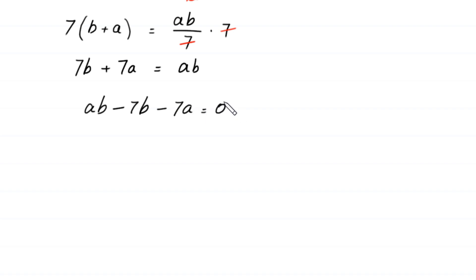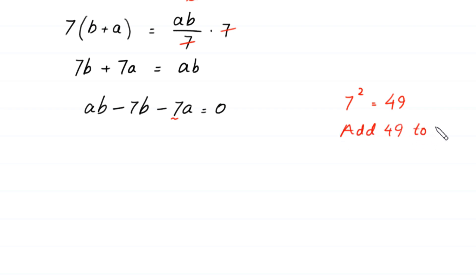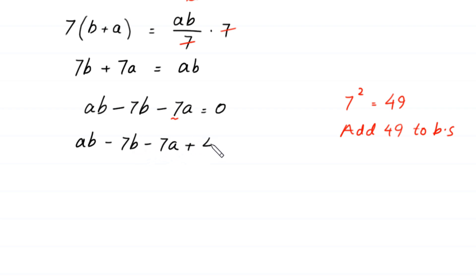Now, because the square of 7 is equal to 49, we add 49 to both sides of this equation. So ab minus 7b minus 7a plus 49 is equal to 49.